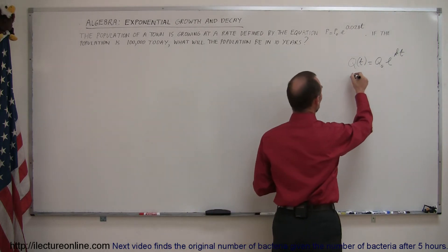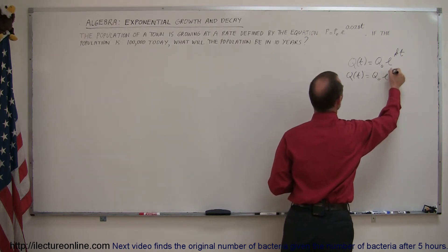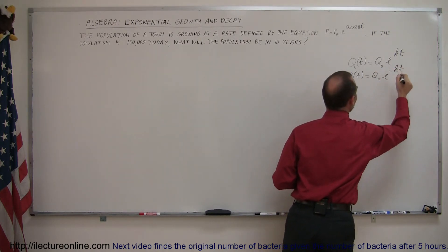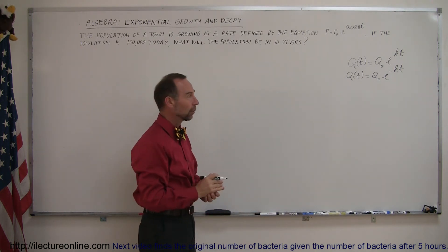We can also use the equation q as a function of time equals q initial times e to the minus kt. So if k is a negative number, then we're talking about the decline or decay of the quantity.